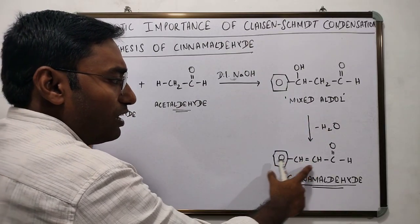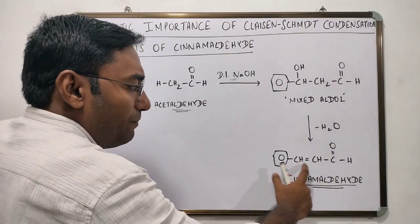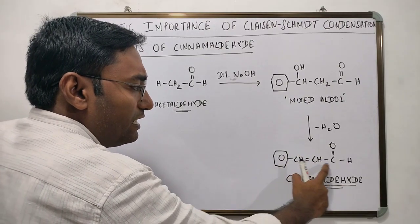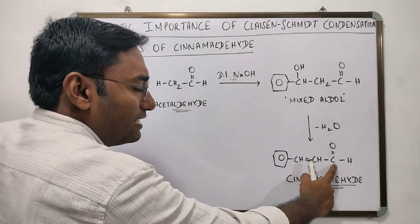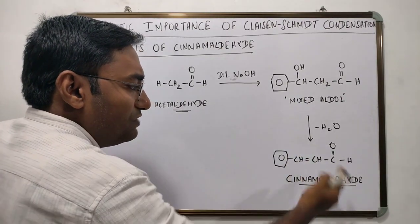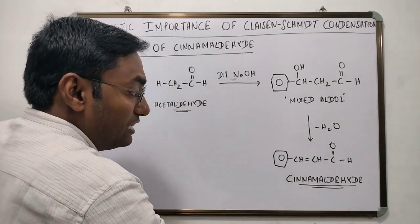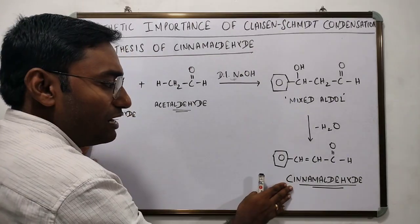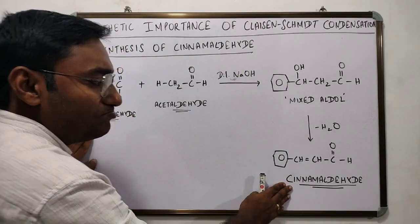The formed mixed aldol is unstable and therefore loses water in the next step to form an alpha-beta unsaturated aldehyde, which in this case is cinnamaldehyde.